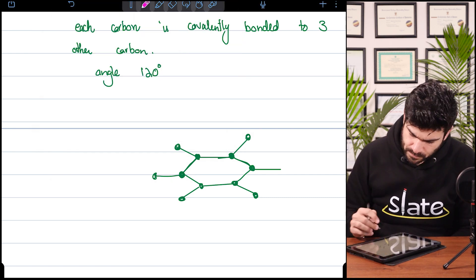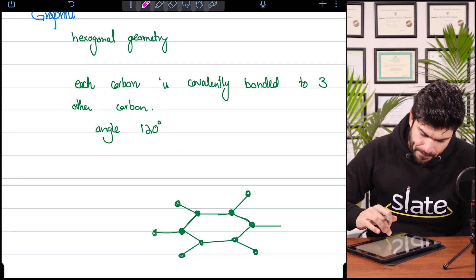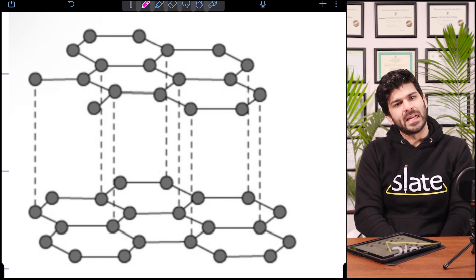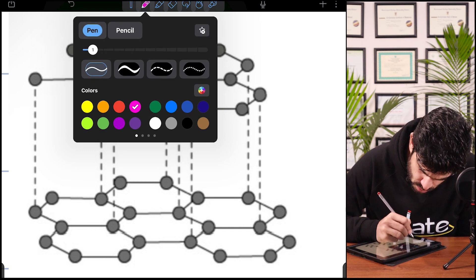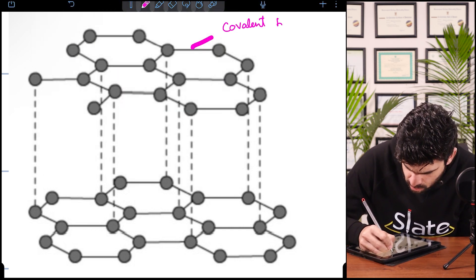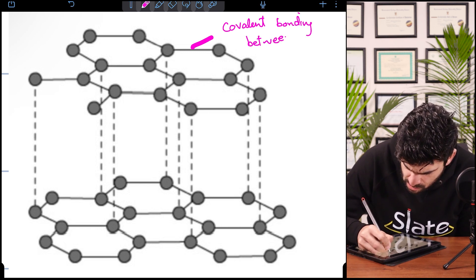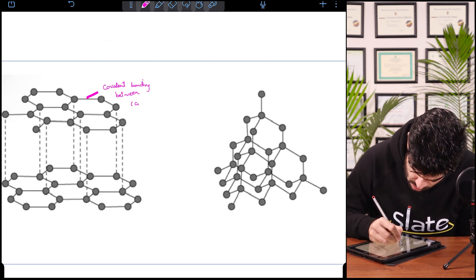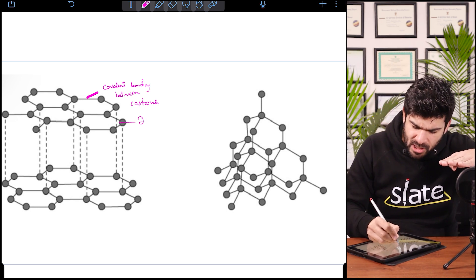That's what a hexagon looks like. And if we repeat it, that's what you will get in the exam. There is covalent bonding between carbons and they form a 2D layer, a two dimensional layer.